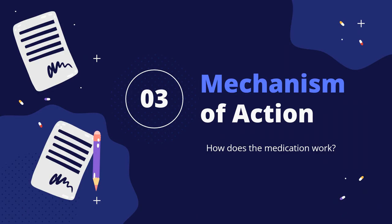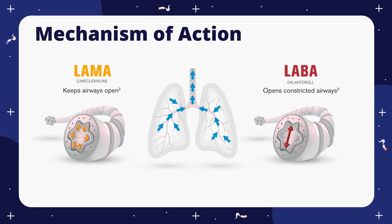Next, we have mechanism of action. How does the medication work? As a combination drug of both umeclidinium and vilanterol, there are two mechanisms of action. The LAMA component, umeclidinium, acts to inhibit binding of acetylcholine to M3 muscarinic receptors and block bronchoconstricting effects of acetylcholine, leading to bronchodilation. Meanwhile, the LABA component, vilanterol, activates B2 receptors and promotes bronchodilation. Both agents act to maximize bronchodilation, allowing for better breathing and reducing the amount of flare-ups in patients.